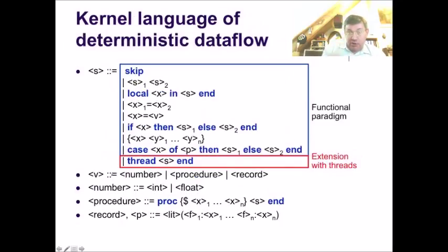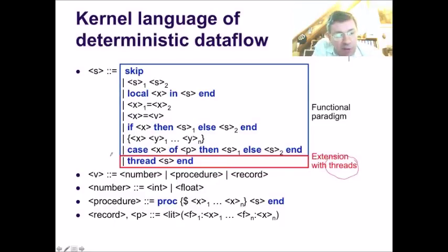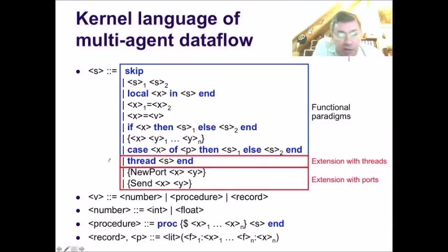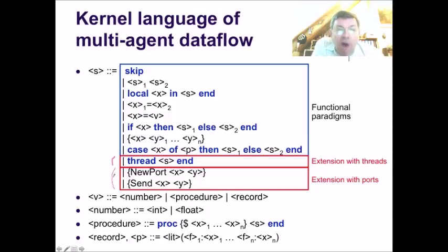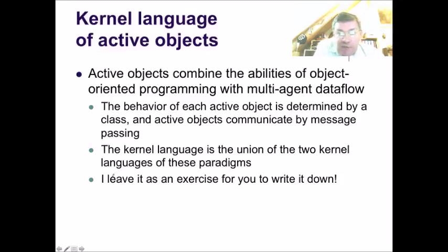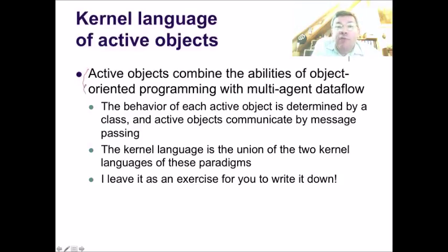Another extension, going the other way, starts again with the functional paradigm, but now we add threads. This lets us write deterministic dataflow programs. We have a fourth kernel language of multi-agent dataflow — we keep the thread extension and then add ports, which are named streams and a kind of communication channel. Semantically, ports and cells are equivalent; you can encode one in terms of the other.